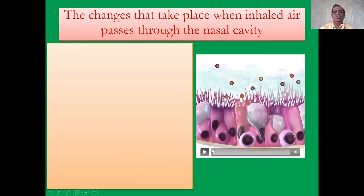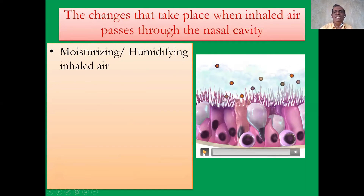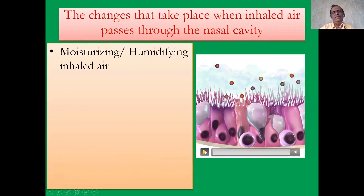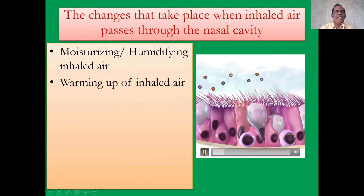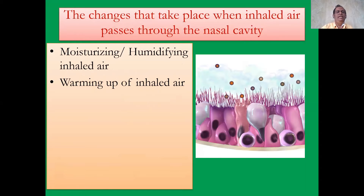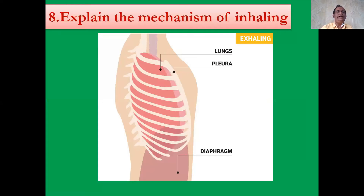You can see the structure of the cilia, the mucus membrane, and the rhythmic movement of the cilia. So the moistening of inhaled air — the respiratory surface is always moist. The next thing is the warming up of the inhaled air, because we are warm-blooded animals. Then removal of waste from inhaled air. These are the changes in the nasal cavity.